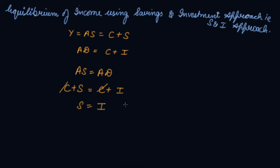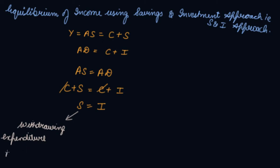Savings equals investment. Now let's understand — savings means you are planning less expenditure, that is, you are withdrawing expenditure from the economy. So if you are reducing your expenditure by saving more, ultimately your expenditure will be reduced, your aggregate demand will go down. This is known as withdrawals in your economy.